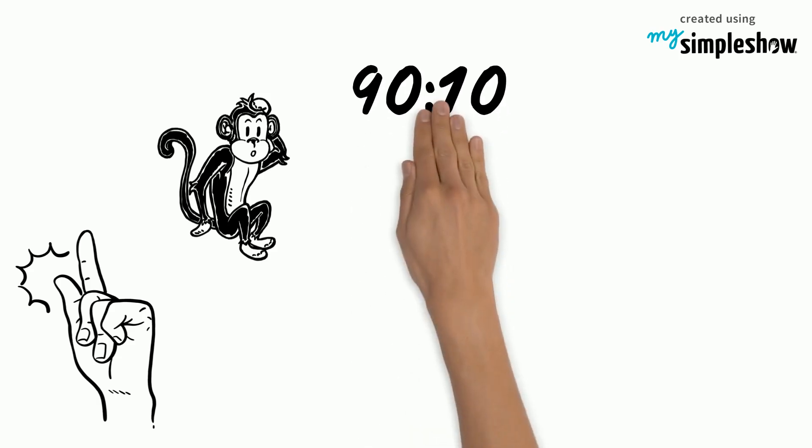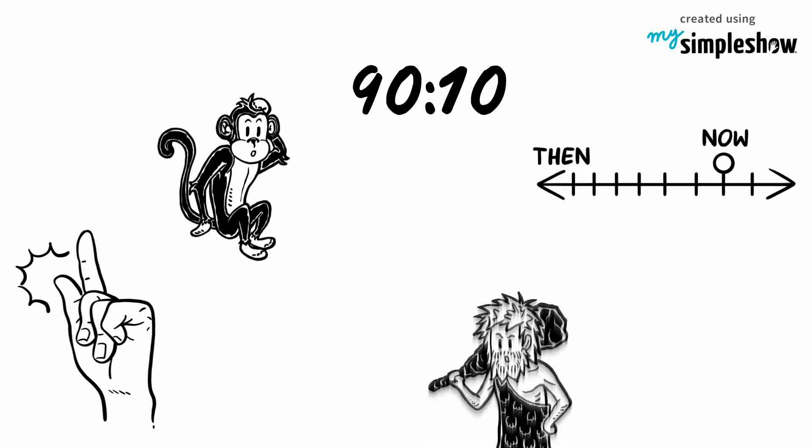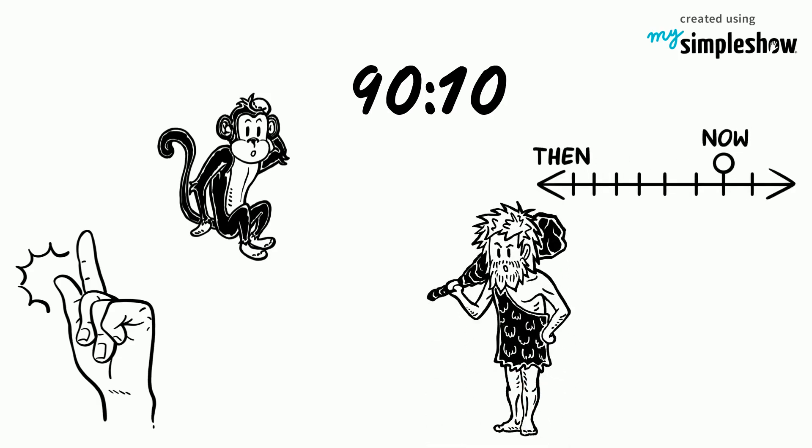Secondly, the 90-10 ratio can be dated back to the Neanderthals who held tools mostly in their right hand, showing the same pattern we observed today.